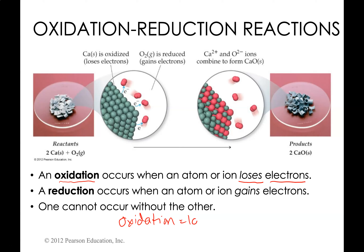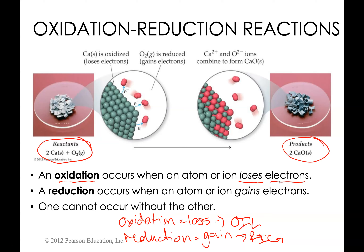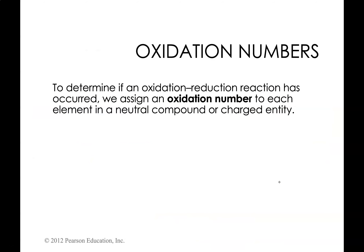Oxidation is loss and reduction is gain. Highly recommend you commit this to memory — it'll help you when trying to identify what is oxidized and what is reduced. When these reactions happen, they have to happen at the same time. We have the example reaction of calcium and oxygen making calcium oxide, and we'll look at rules for determining what is oxidized and reduced using oxidation numbers.